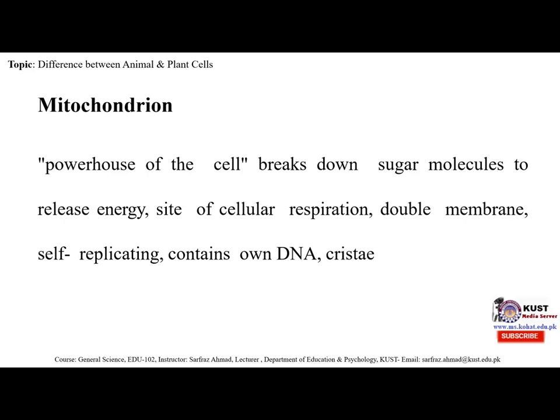Mitochondria are double membrane organelles found in the cytoplasm of all eukaryotic cells. They provide energy by breaking down carbohydrate and sugar molecules, hence they are also referred to as the powerhouse of the cell. The Golgi apparatus was observed in 1897 by Italian cytologist Camillo Golgi, and his staining technique is known as Golgi stain.